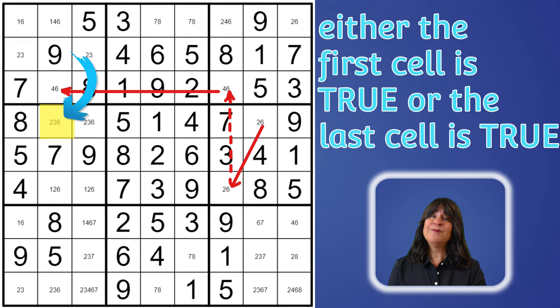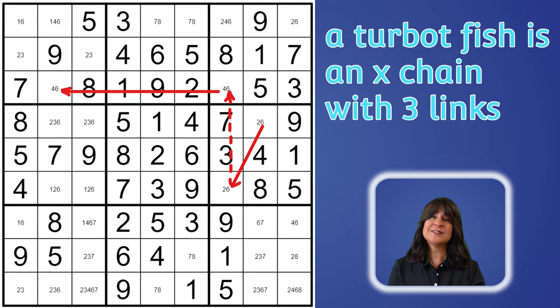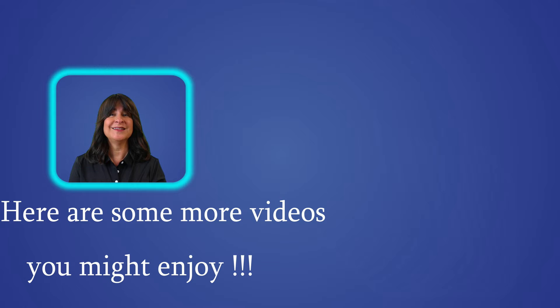This same logic holds for the earlier examples where the middle link was a strong link, but following the on-off or true-false logic of a chain is important to understand. A turbofish pattern is simply an X chain with three links involving four cells, where X is the candidate number being followed around the chain. The terminology is not as important as the logic behind it — whether the links are all strong or the middle link is weak, either the first or last cell will be true. So follow what-if scenarios, make assumptions, and see where it takes you. I hope you enjoyed this tutorial and learned something.